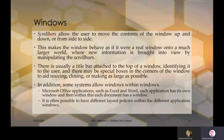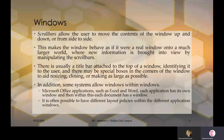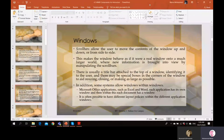Windows also provide scroll bars, allowing the user to move the contents of the window up and down or from side to side — both horizontal and vertical scroll bars. This makes the window behave as if it were a real window onto a much larger world, where new information is brought into view by manipulating the scroll bar. There is usually a title bar at the top identifying the window, and special boxes in the corners for resizing, closing, or maximizing.